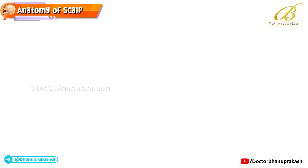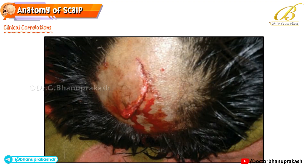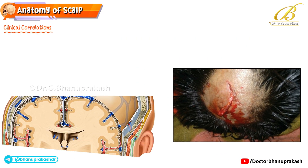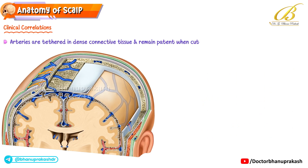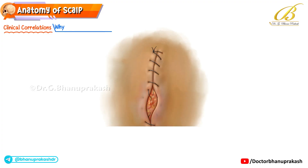Now let's look at some important clinical correlations. First, why do scalp wounds bleed so heavily? The answer lies in the dense connective tissue layer, where arteries are tightly anchored by fibrous septa. Because they are tethered, these vessels cannot retract when cut, so bleeding is brisk and persistent.